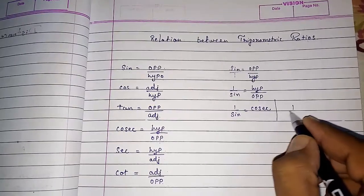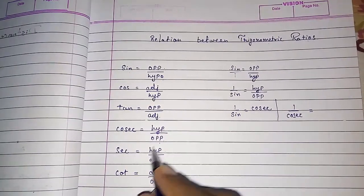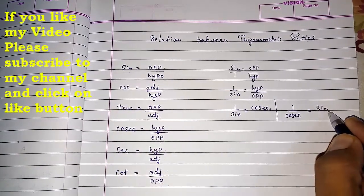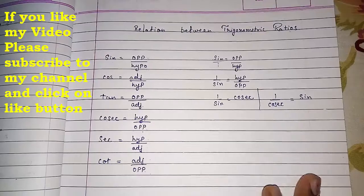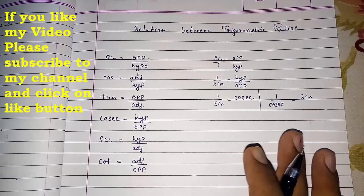Similarly, I can write one by cos will be equal to sec. So these are the basic things which we have to learn to solve trigonometric chapter.